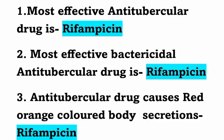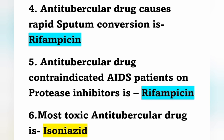First question: the most effective anti-tubercular drug is Rifampicin. The most effective bactericidal anti-tubercular drug is also Rifampicin. Anti-tubercular drug that causes red-orange colored body secretions — for example, orange color of urine — is due to Rifampicin. Anti-tubercular drug that causes rapid sputum conversion is also Rifampicin, as it is the most effective drug.